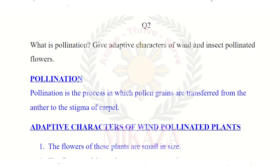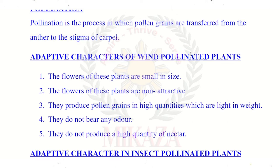Question number 2: What is pollination? Give the adaptive characters of wind and insect pollinated flowers. Pollination is the transfer of pollen grains from one flower to another flower, specifically to the stigma. When insects or wind carry out this transfer, the process is called pollination.